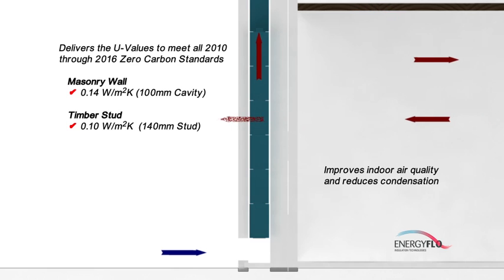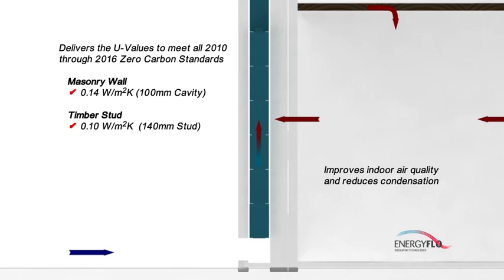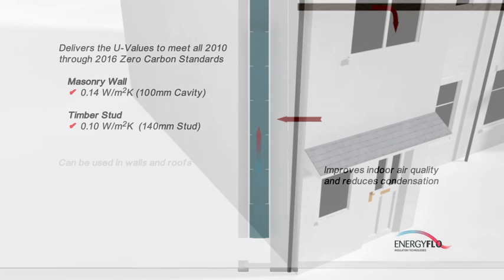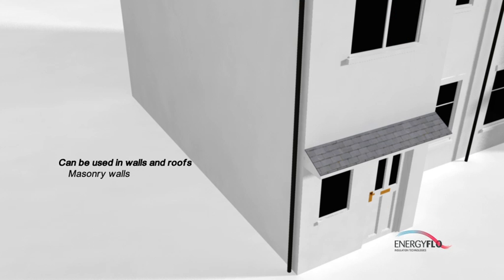For instance, with dynamic insulation, U values of between 0.1 to 0.15 are easily achievable in a 100mm cavity in a traditional masonry wall.